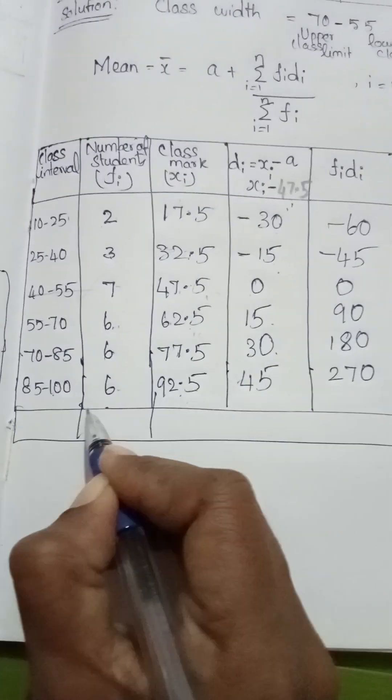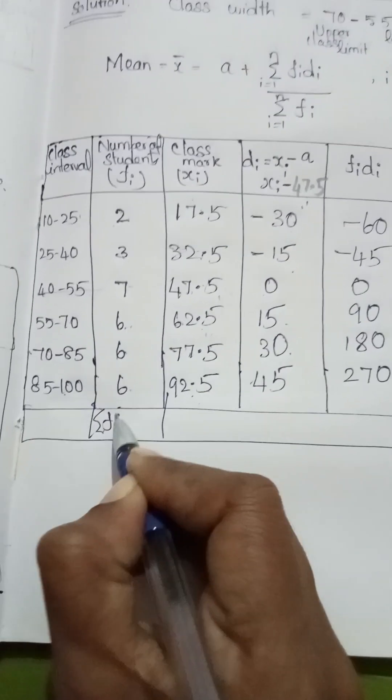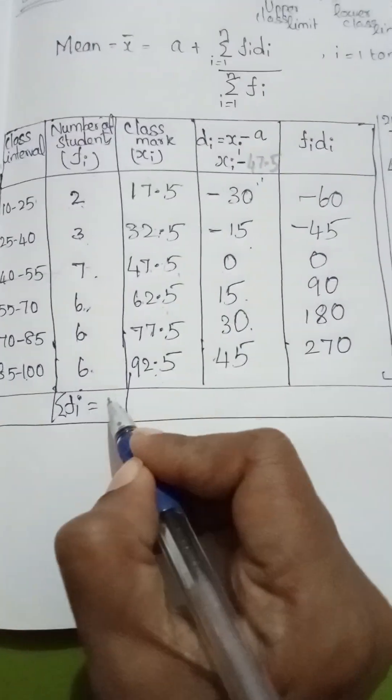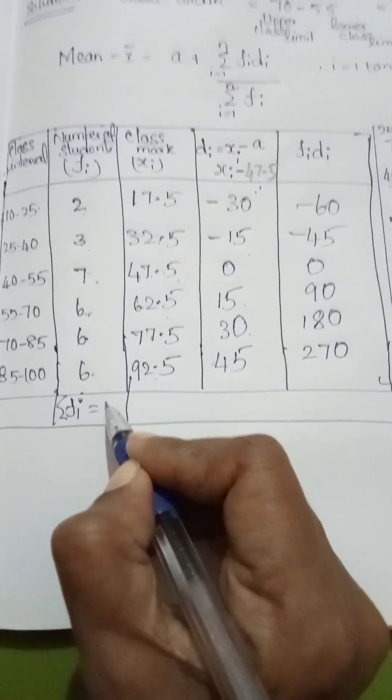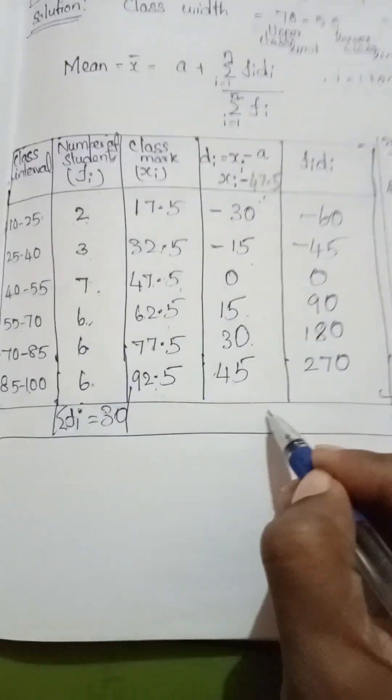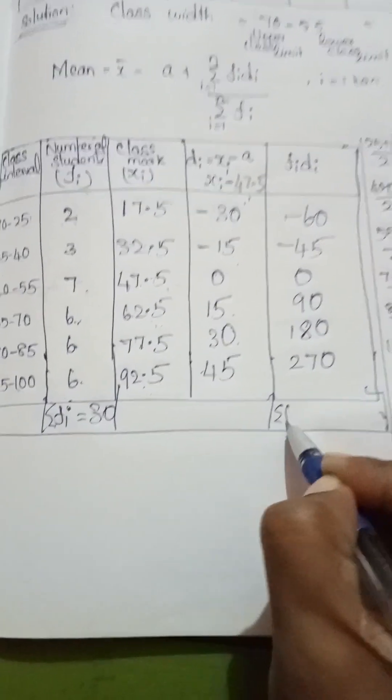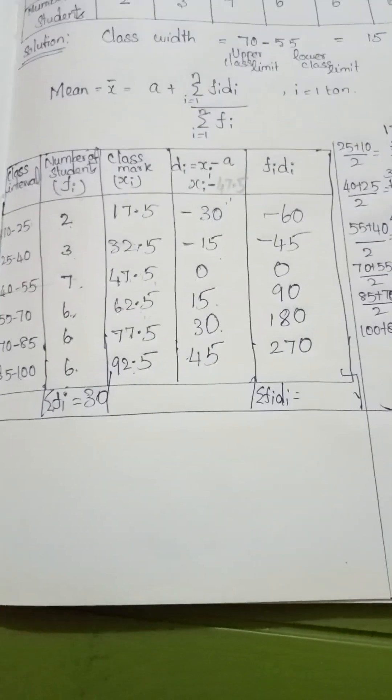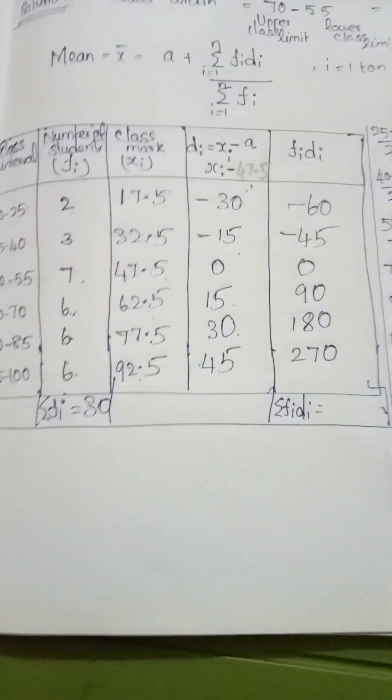You add these values. Summation fi is 2 plus 3 plus 7 plus 6 plus 6 plus 6. So total value is 30. You add these values, summation fi into di equals 435.